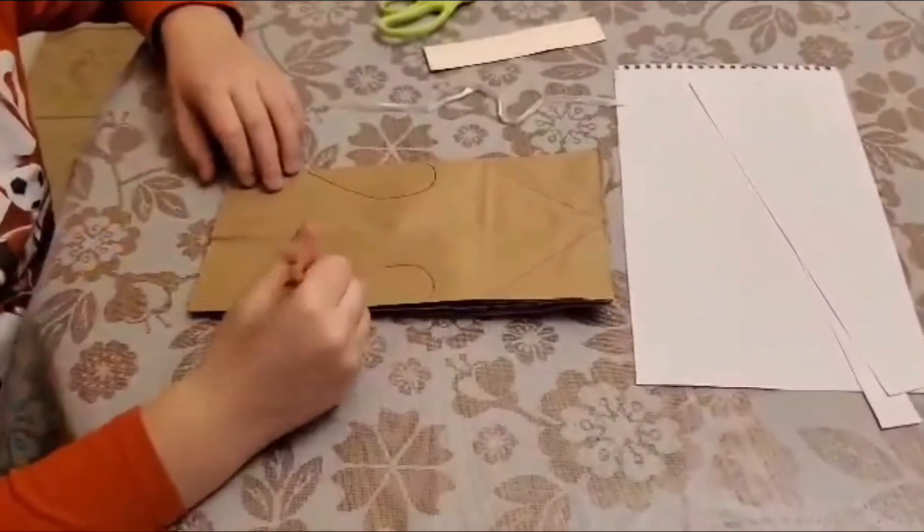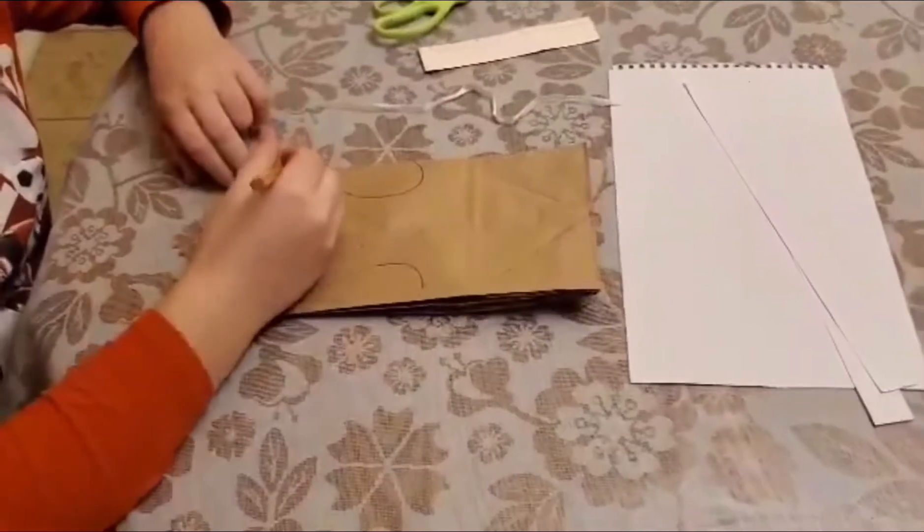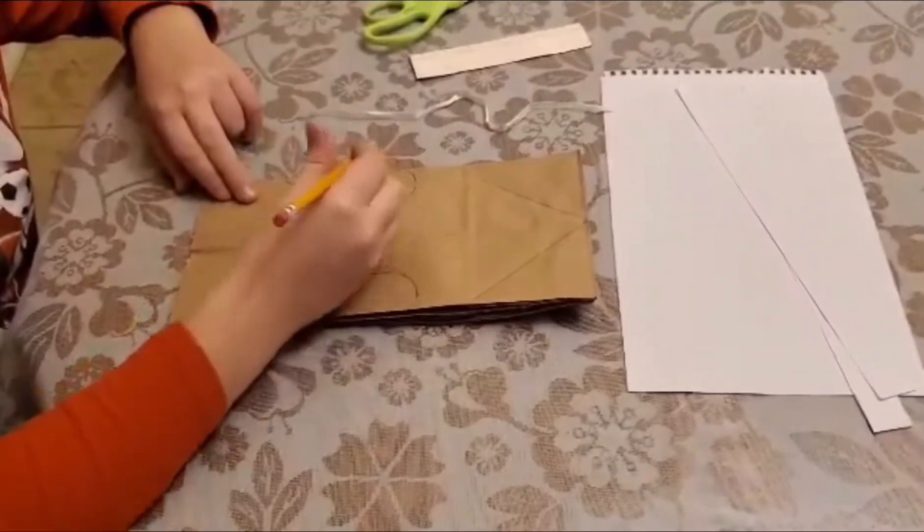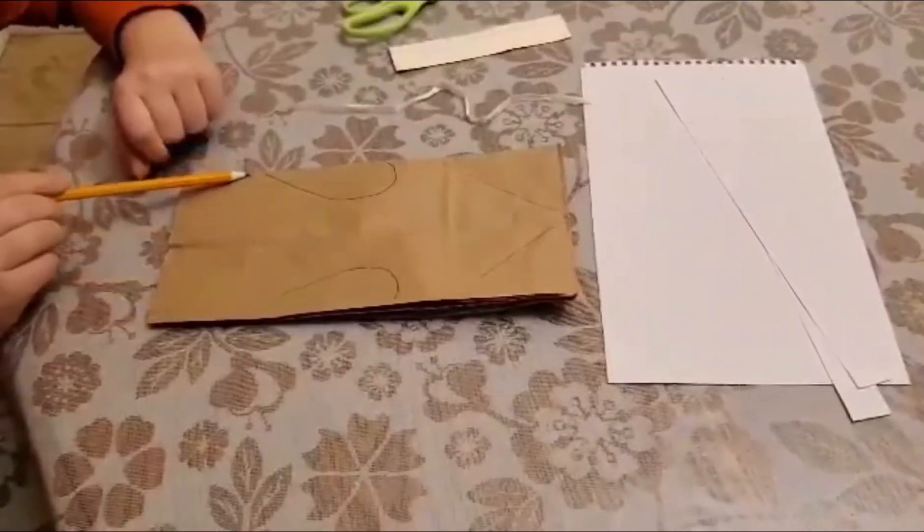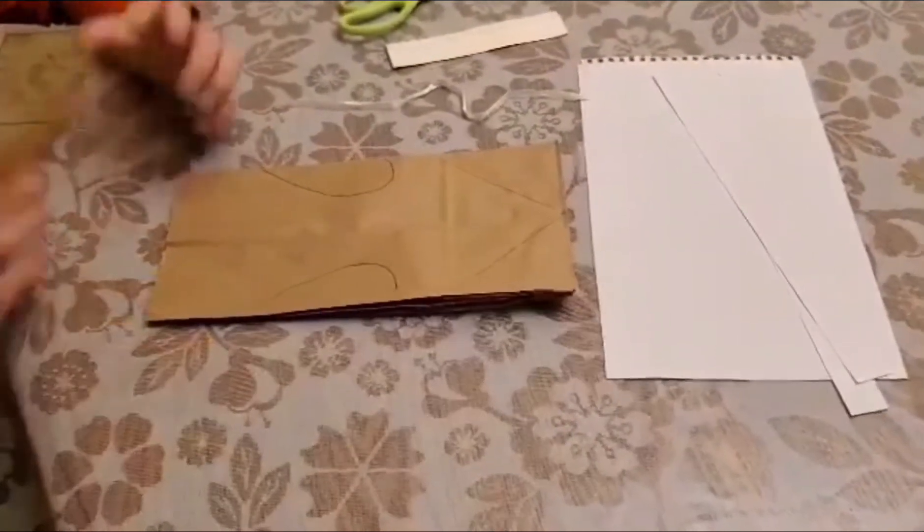And then you draw another half on the other side, like half a heart on the other side. And you got to check with a ruler if it's the same, like the same.